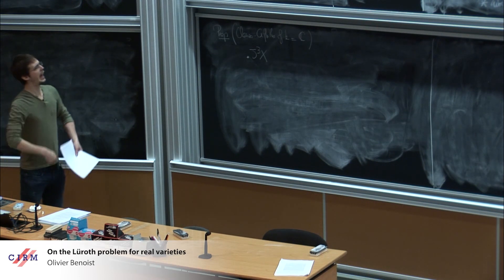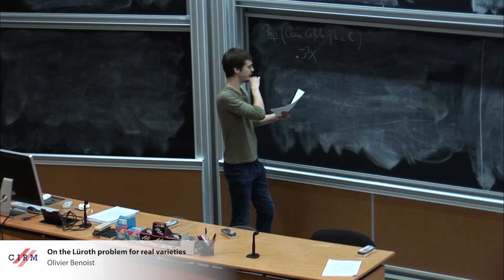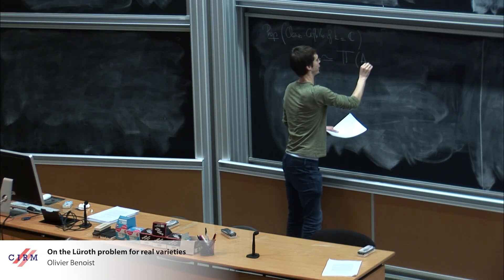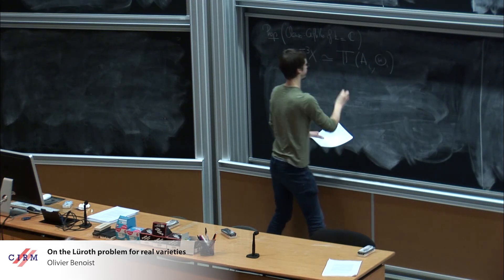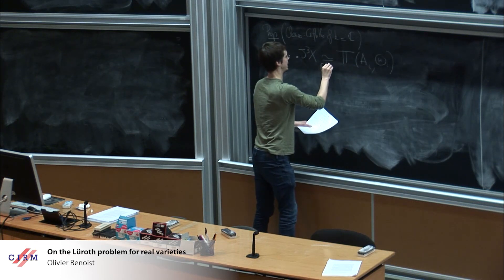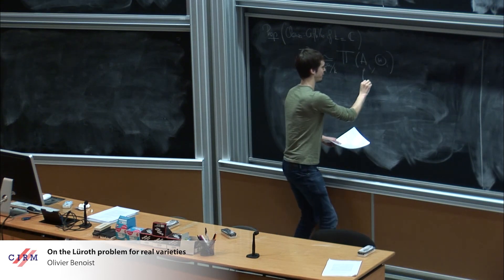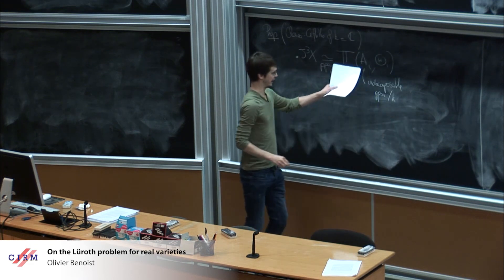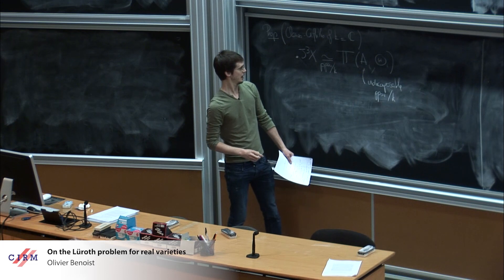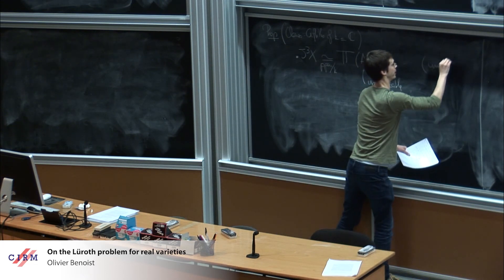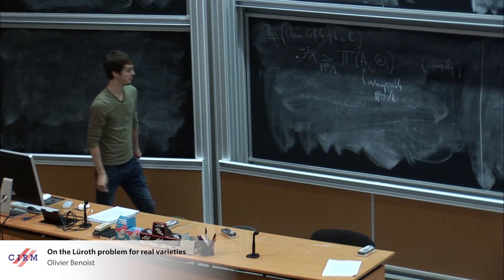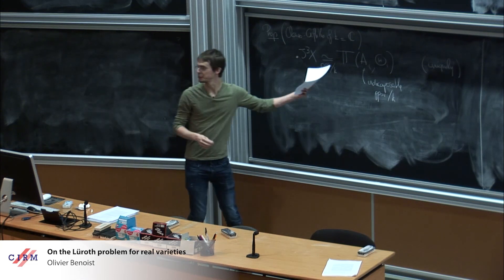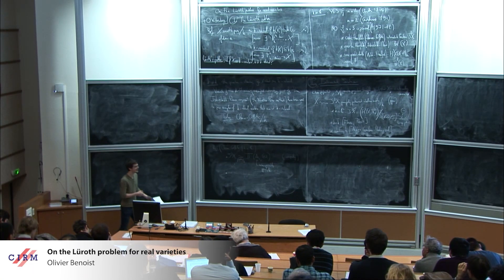The third intermediate Jacobian, as any principally polarized Abelian variety, may be written in a unique way as a product of indecomposable principally polarized Abelian varieties. It is isomorphic as a principally polarized Abelian variety over k as a product of indecomposable PPAVs over k, meaning they cannot be written as a product of PPAVs over k, and this decomposition is essentially unique up to permutation of the factors.